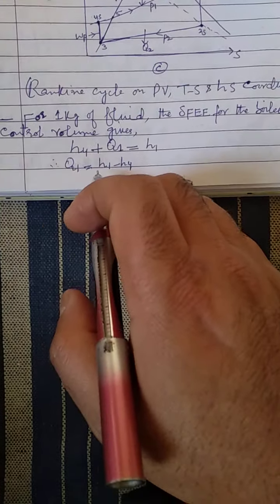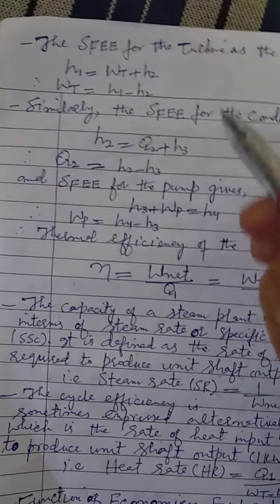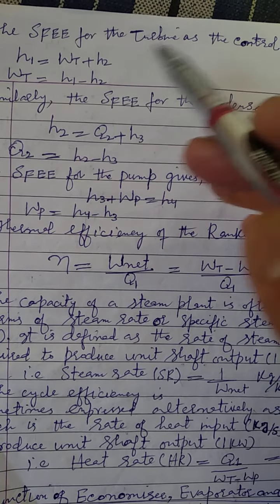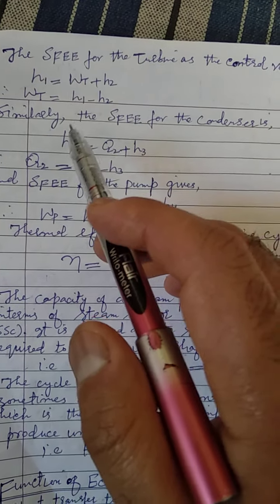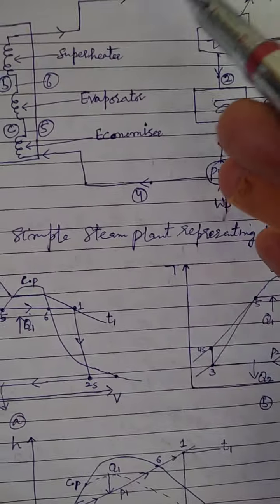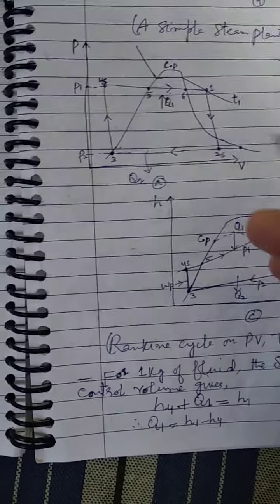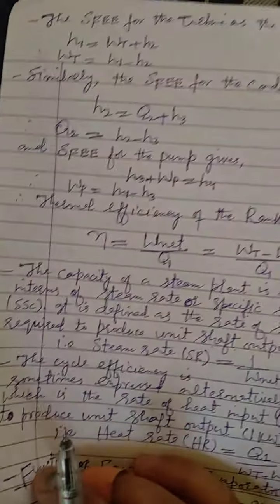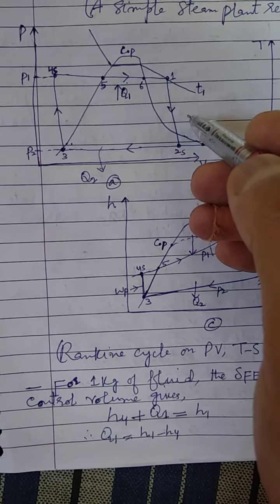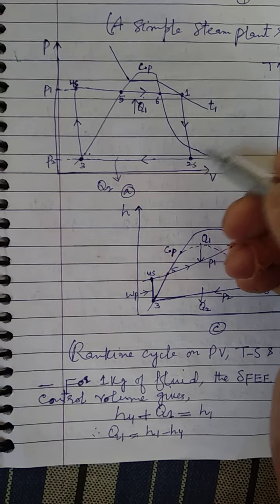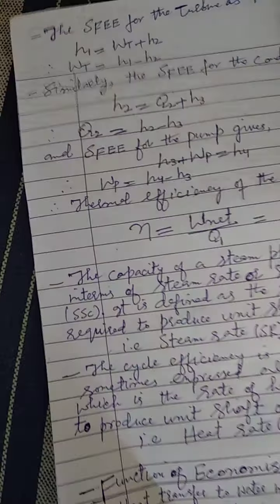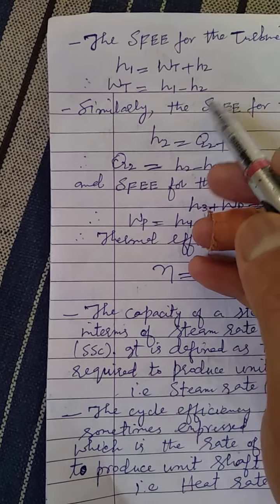From this equation, Q1 equals H1 minus H4. Similarly, applying the steady flow energy equation for the turbine as a control volume: the turbine process goes from state 1 to 2. The equation gives H1 equals WT plus H2, where H1 is enthalpy at 0.1. Therefore, turbine work WT equals H1 minus H2.